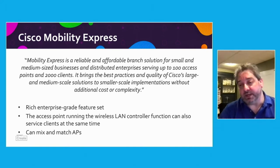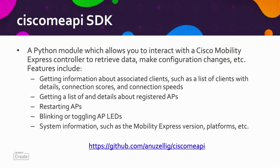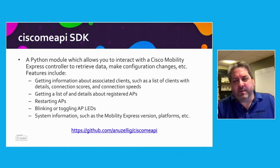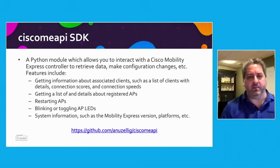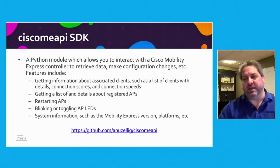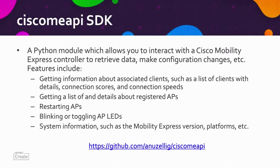The Python module I created allows you to interact with Cisco Mobility Express to retrieve data, make configuration changes, and so on. You can do things like get information about the clients that are associated, get a list and details of the access points that are registered, reboot access points, blink their LEDs, and so forth. At the bottom of the screen is a link to the GitHub repo with all the source code.